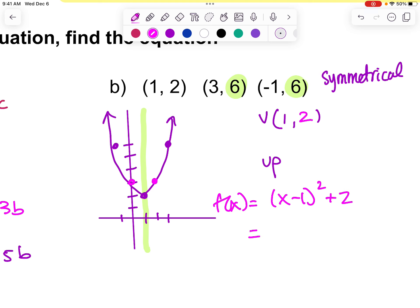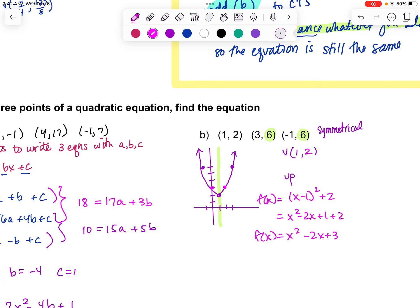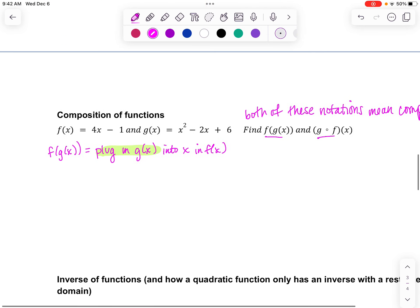And if I need this to be in standard form, I could, real quick, x squared minus 2x plus 1 plus 2. So f of x equals x squared minus 2x plus 3. All right. Moving on.